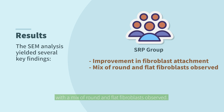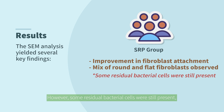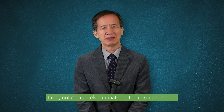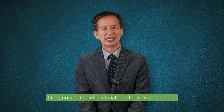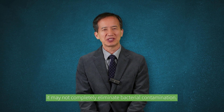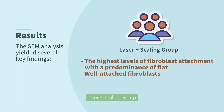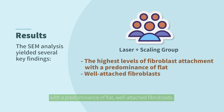The SRP group demonstrated an improvement in fibroblast attachment compared to the control, with a mix of round and flat fibroblasts observed. However, some residual bacterial cells were still present, suggesting that while SRP can enhance fibroblast attachment, it may not completely eliminate bacterial contamination.